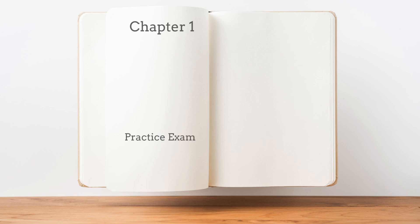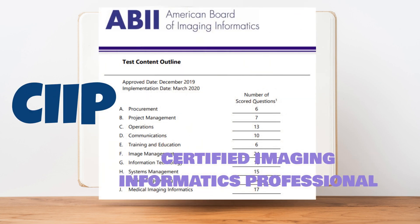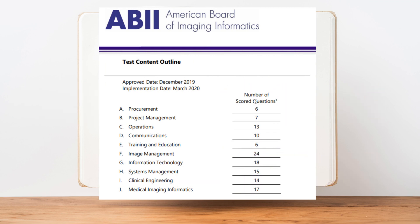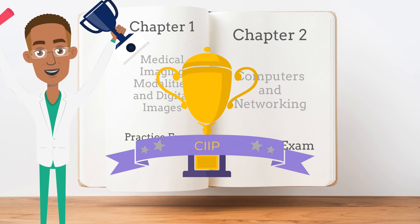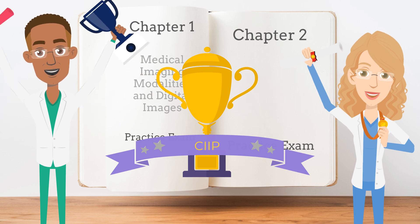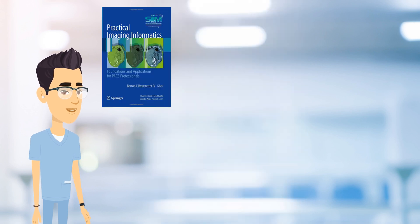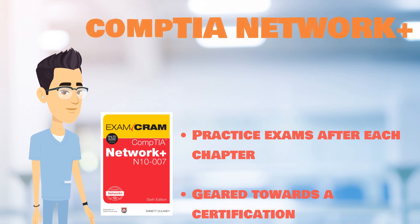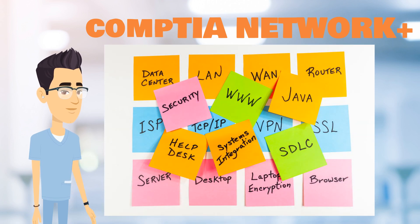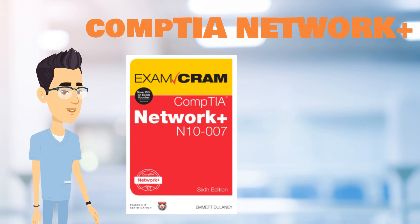Each chapter contains practice exams that can help solidify the chapter contents for you. The chapters are based on the topics covered in the CIIP certification exam. So if you're an x-ray tech or CT tech, you're likely eligible to take this test. It would make sense to read this book on your path to certification as a Certified Imaging Informatics Professional, as well as learning everything you can about the PACS field. Also read the book for networking — the one recommended is the ExamCram CompTIA Network+ book, geared towards the CompTIA Network+ certification. As you read, you'll learn about network communication concepts that are integral in the PACS field, and you'll be preparing for a certification.